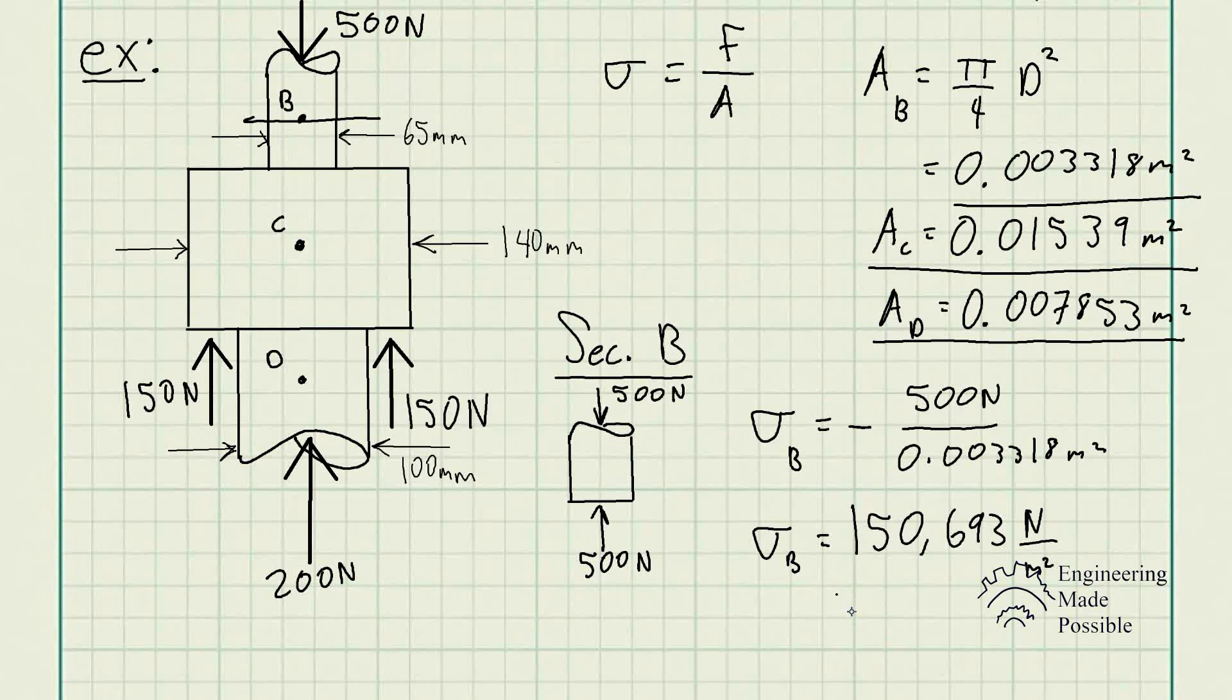This is the stress at point B. However, the standard unit that we use for stress is in kilopascals for the metric system. The unit newtons per meter squared is equivalent to the unit pascal. And if we want to further abbreviate it, since it's 150,693 pascals, then we could just say 150.69 kilopascals, 150.7 rounding up kilopascals. This is the standard unit that we usually use.